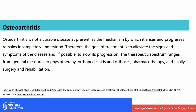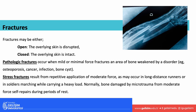When we look at fractures, they could be of two types — open or closed. When we're talking about an open fracture, we're talking about the skin breaking and the bone coming out — the bone is coming outside of the skin.